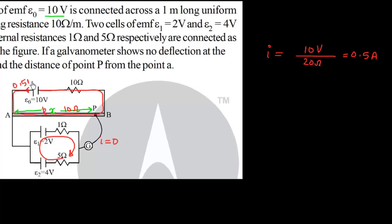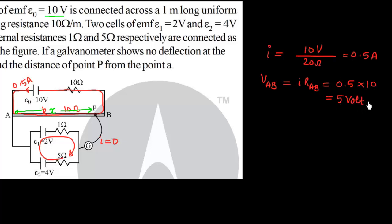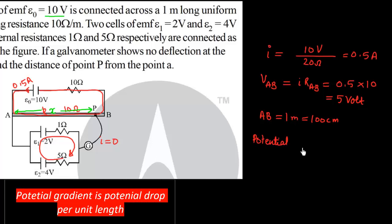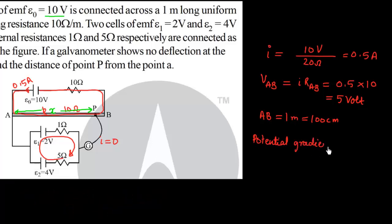The current is 0.5 ampere. VAB, voltage across AB, equals I times R_AB. That is 0.5 ampere times 10 ohm, equal to 5 volts. The length of AB is 1 meter equals 100 centimeter. So the potential gradient K in wire AB equals VAB upon its length, equal to 5 upon 100 volt per centimeter.